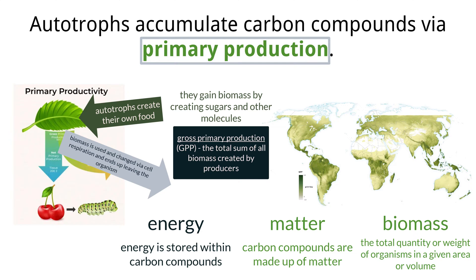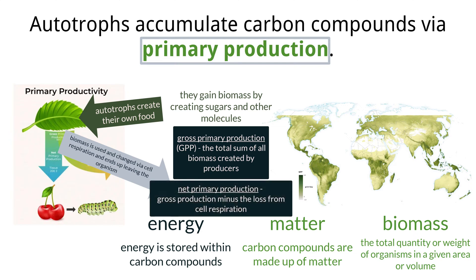This used-up biomass and associated energy can no longer be consumed by a heterotroph, meaning it cannot be moved up the food chain. We account for this loss of biomass in a measurement called net primary production, in which we take the gross primary production and subtract the loss from cell respiration. The unit of measurement for biomass is grams of carbon per meter squared per year.